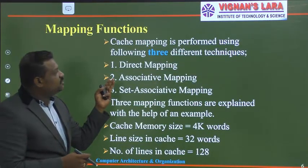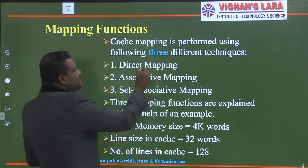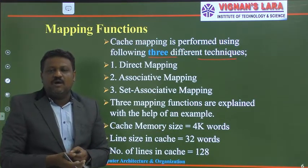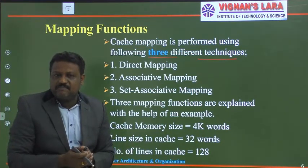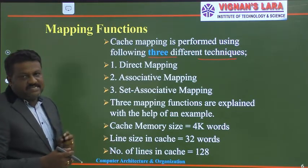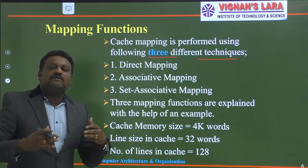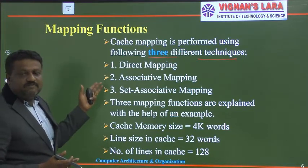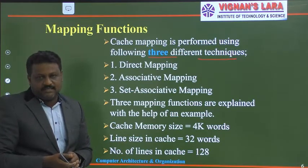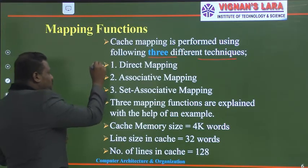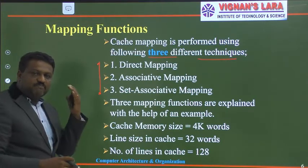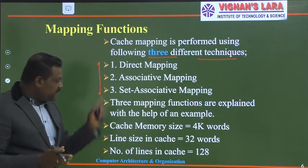Cache mapping is performed using three different techniques: the first is direct mapping, the second is associative mapping, and the third is set associative mapping. In our systems, we can use any one of these three mapping methods to map main memory blocks onto cache memory lines. I am going to explain these three mapping methods by considering a small example using parameters for both main memory and cache memory.